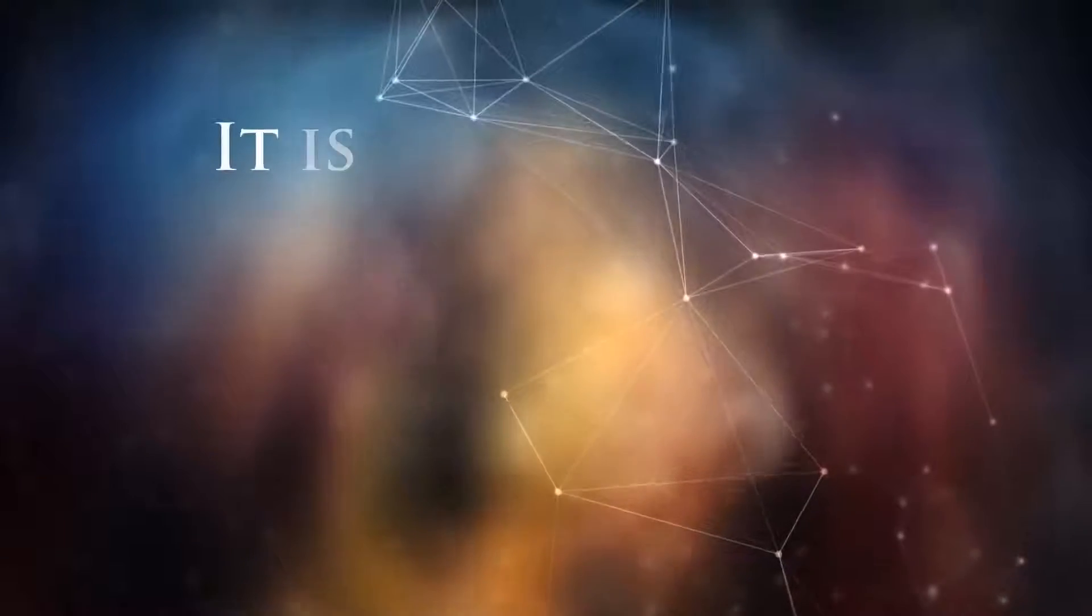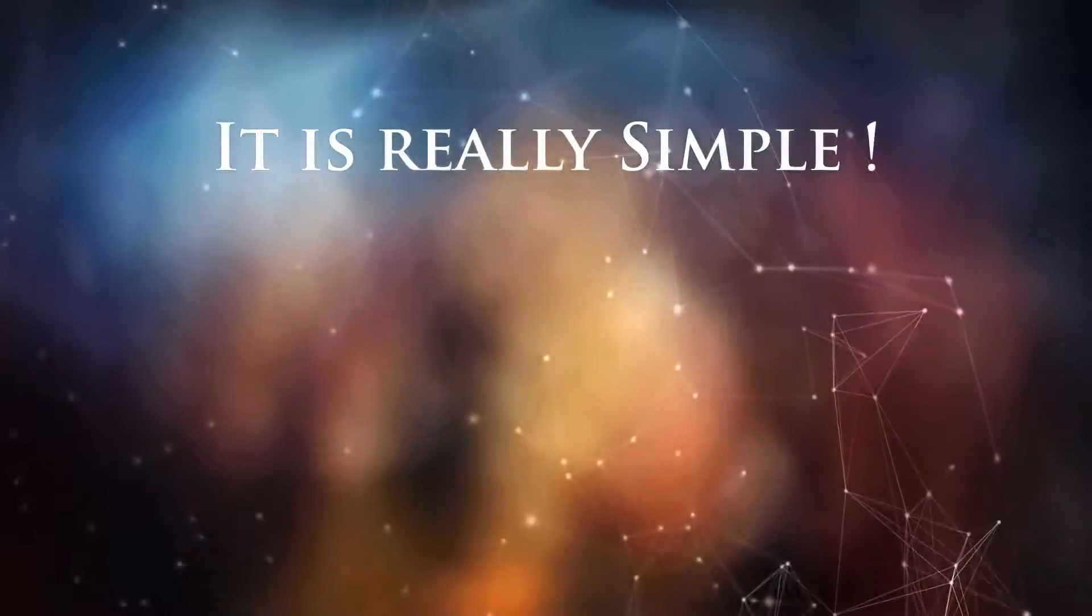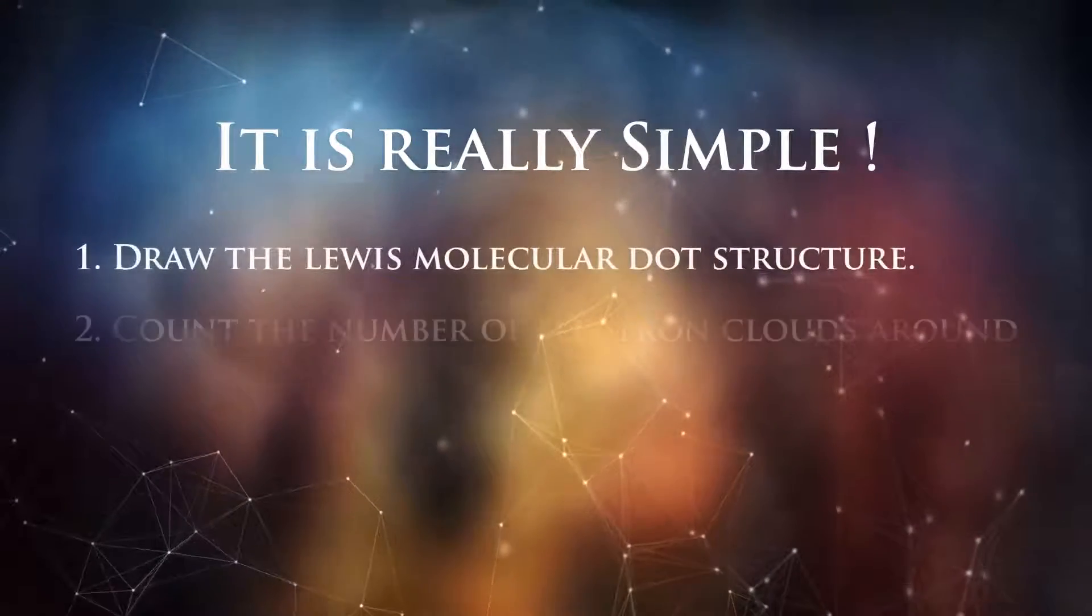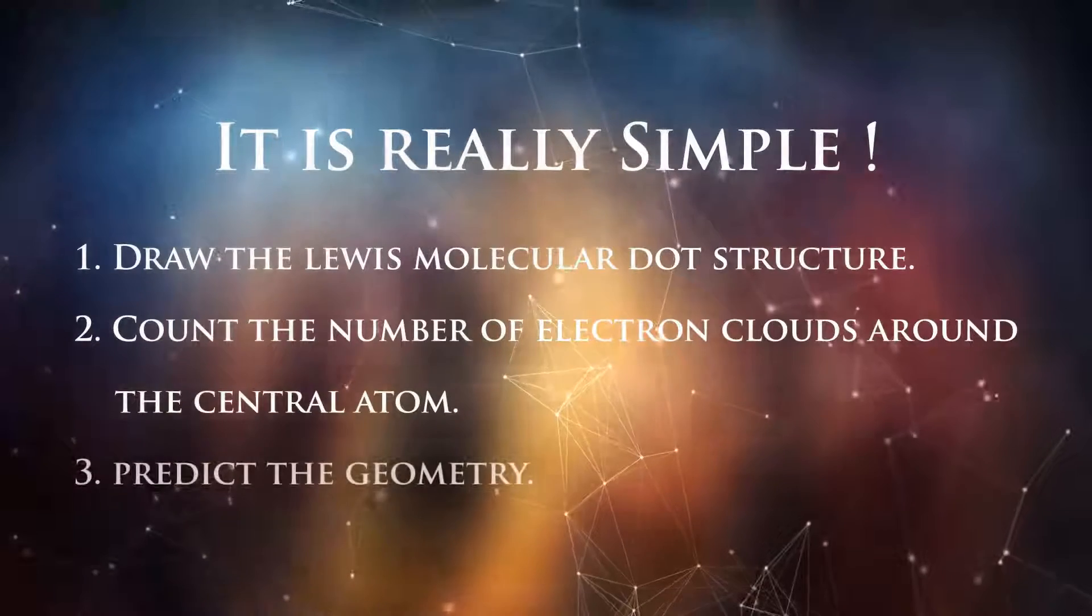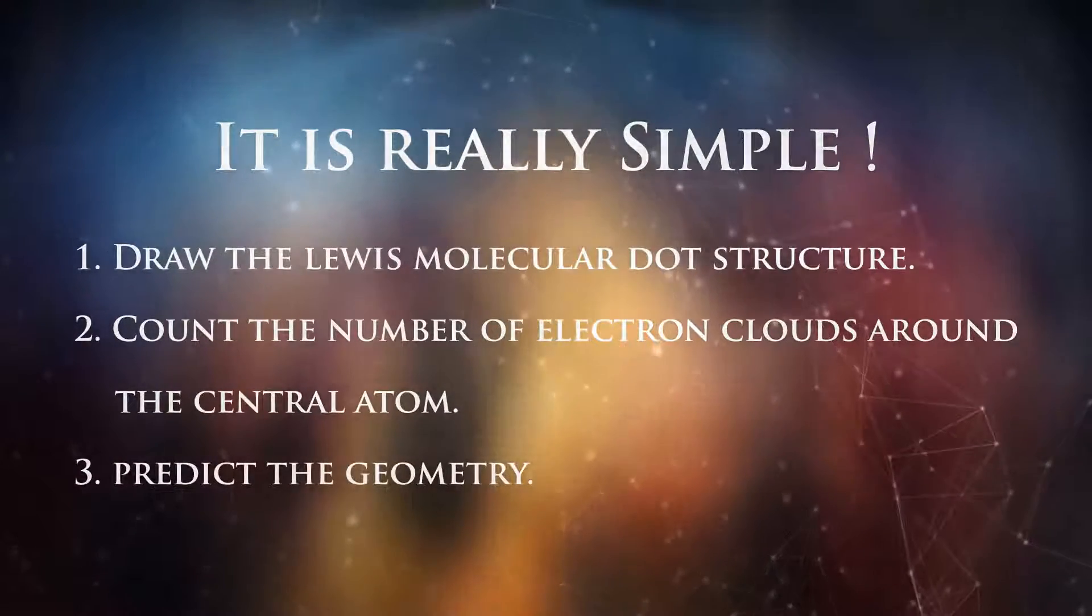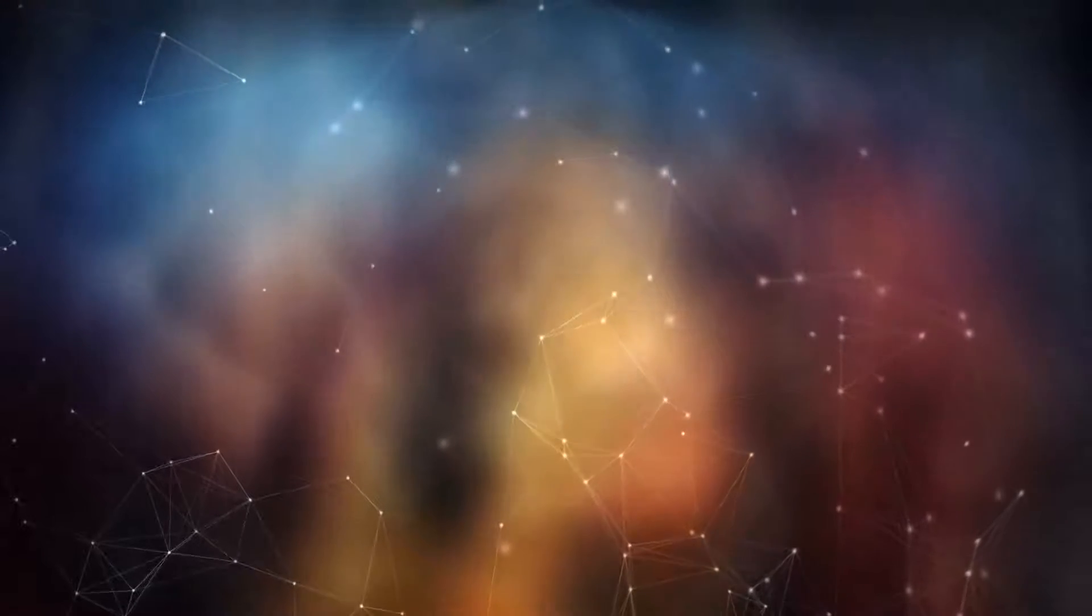To predict the 3D structure of a molecule, you have to go through three steps. The first step is to draw the Lewis structure. The second step is to count the number of electron clouds around the central atom, then predict the geometry.